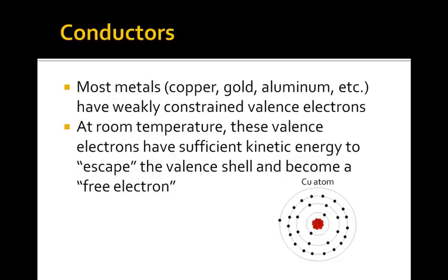Conductors are a good example of that. Most metals, like copper, gold, and aluminum, have weakly constrained valence electrons. They have one or two electrons in their valence band, and at room temperature these valence electrons have a lot of kinetic energy. This kinetic energy allows them to escape from the valence shell, or escape from their associated nucleus, and become what we call a free electron. If we put a bunch of copper atoms together, these valence electrons can wander throughout the material — at room temperature they have sufficient energy to migrate from atom to atom.